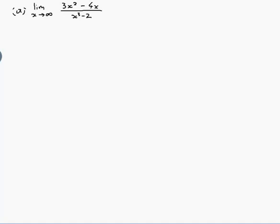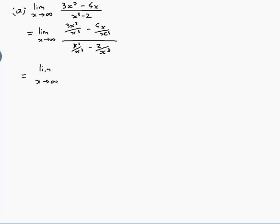One trick is to divide the top and bottom by the largest power of x anywhere in the fraction. So let's divide top and bottom by x cubed. That gives us the limit as x approaches infinity of (3x²/x³ - 4x/x³) / (x³/x³ - 2/x³), which simplifies to the limit of (3/x - 4/x²) / (1 - 2/x³).